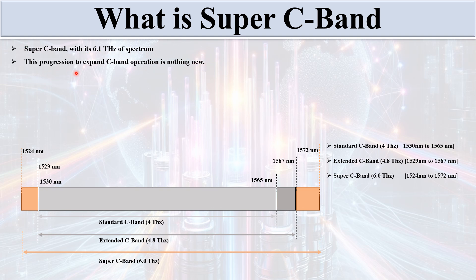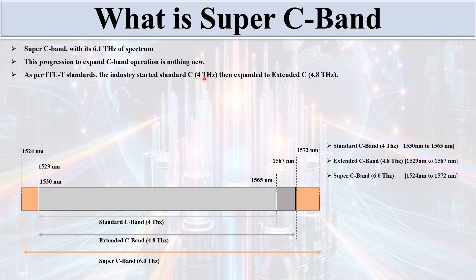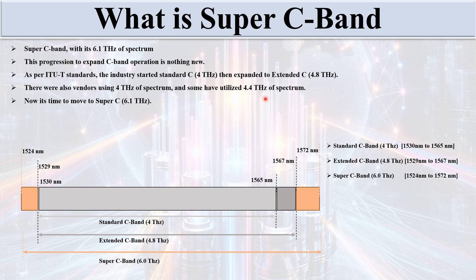This progression of expanding C band operation is nothing new. As per ITU-T standards, the industry started with standard C at 4 terahertz, expanded to extended C at 4.8 terahertz. Some vendors use 4 terahertz, some use 4.4 terahertz, and some use the full 4.8 terahertz extended C band. Now it's time to move to Super C, which utilizes 6.1 terahertz of spectrum — extending at both ends of the extended C band.